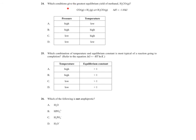Question 24 asks which conditions give the greatest equilibrium yield of methanol. The reaction is exothermic in the forward direction and has two moles of gas on the left and one mole on the right. Increasing pressure shifts equilibrium to the side with fewer gaseous moles — the right — so we want high pressure. For temperature, to favour the exothermic forward direction we want low temperature, which causes equilibrium to shift to replace the lost heat. Therefore the answer is A: high pressure, low temperature.